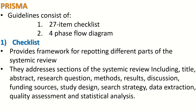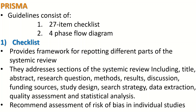The 27-item checklist addresses sections of the systematic review, including the title, abstract, research question, methods, results, discussion, funding sources, study design, search strategy, data extraction, quality assessment, and statistical analysis. It also recommends assessment of risk of bias in each individual study.